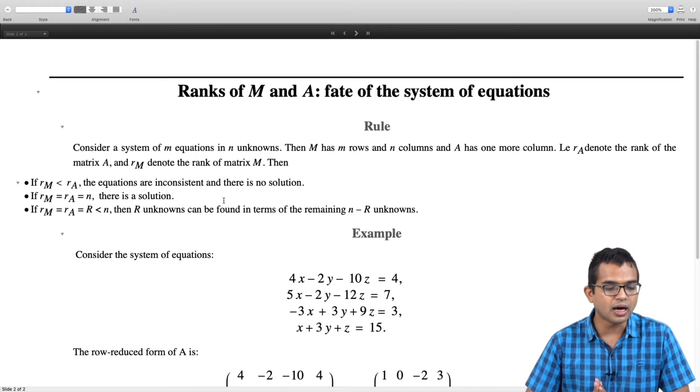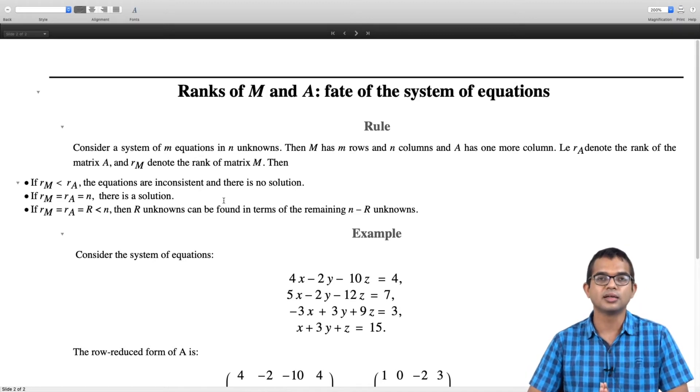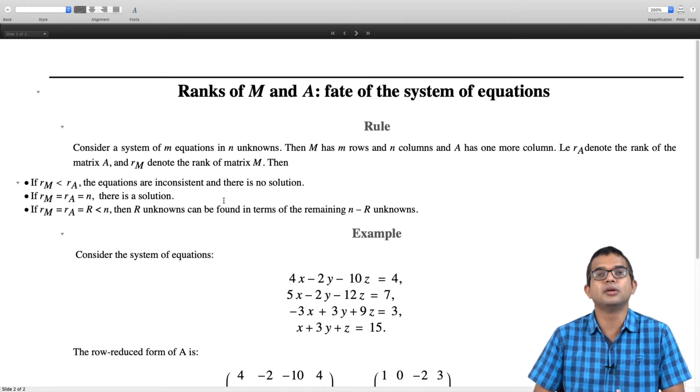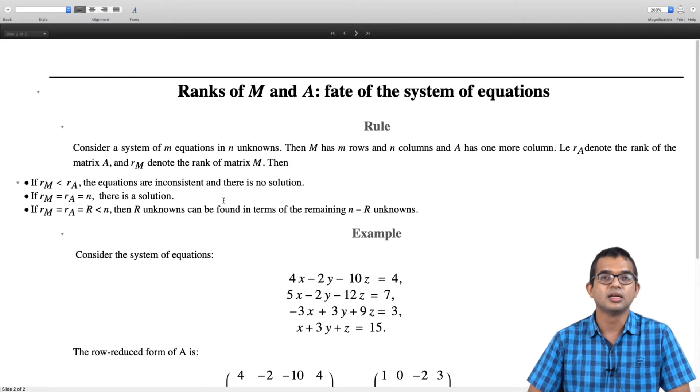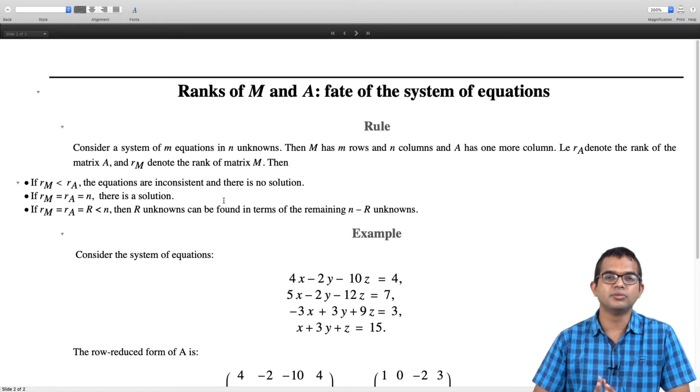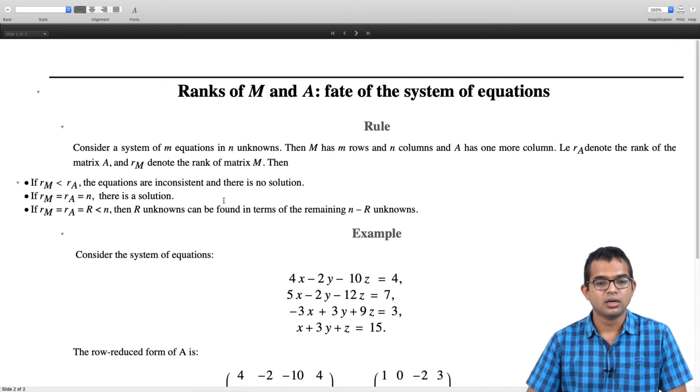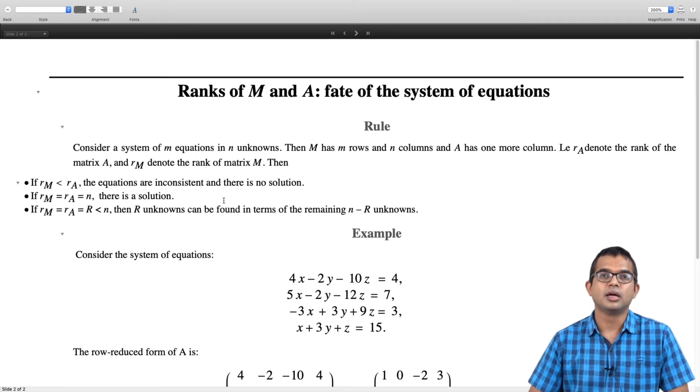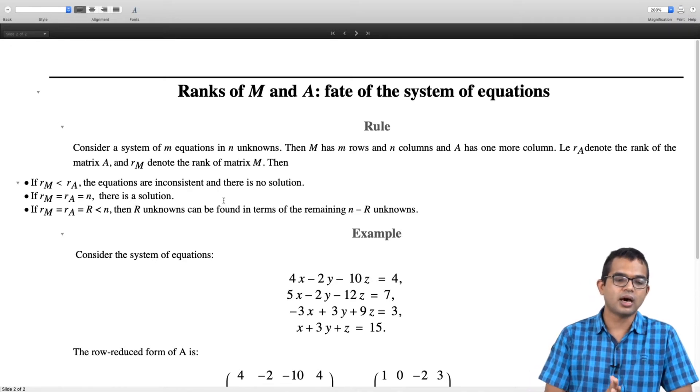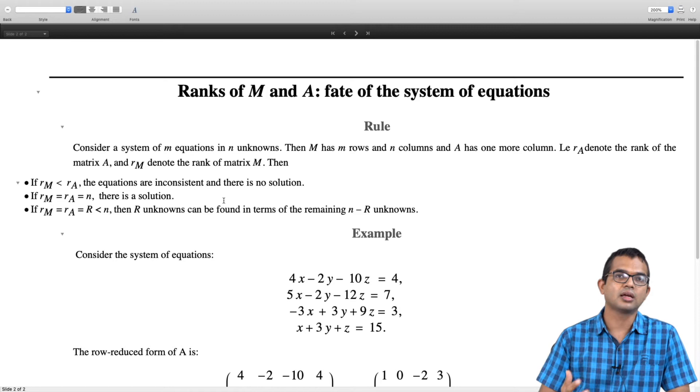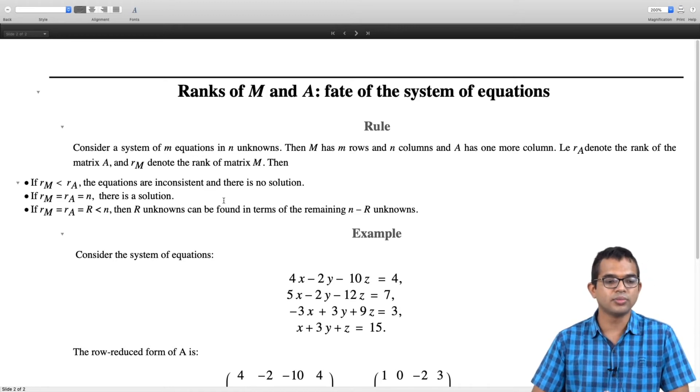So if rM is not equal to rA, it turns out that rM, the only possibility is for rM to be less than rA. rM can never be greater than rA. You can see it when we discuss how the rank of a matrix can also be extracted from determinants. So the matrix A has, if at all, it has more information than the matrix M. It can never have less information than the matrix M. So that is also clear intuitively.